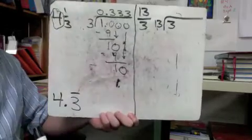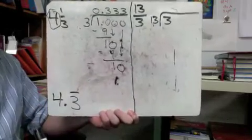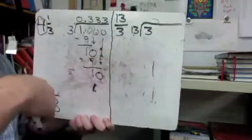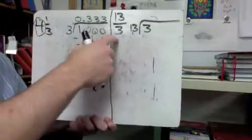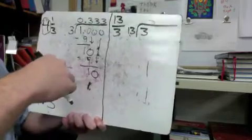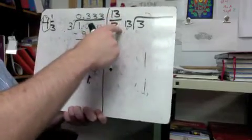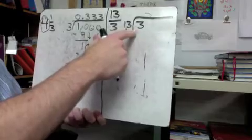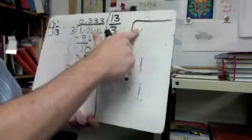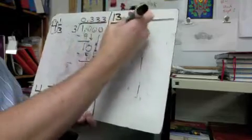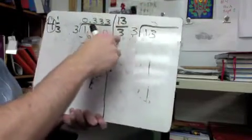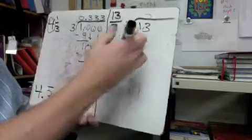I'll put that on the end of my whole number four, and put a little line above the three to show it keeps repeating. Now if we try this example as an improper fraction, it should come out the same, because four and one-third equals thirteen-thirds. Let's try thirteen divided by three — I need to set it up correctly with three as the divisor and thirteen inside.